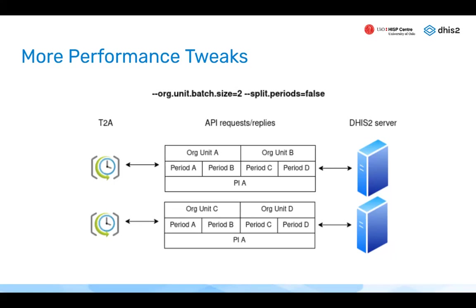There are additional parameters documented in the README file in the GitHub repository and in a DHIS2 blog post, which covers everything explained here with more detail.